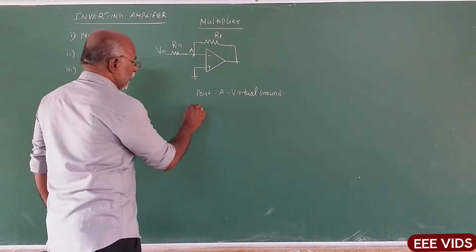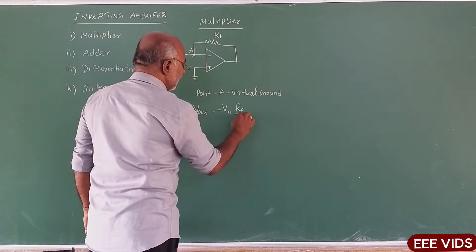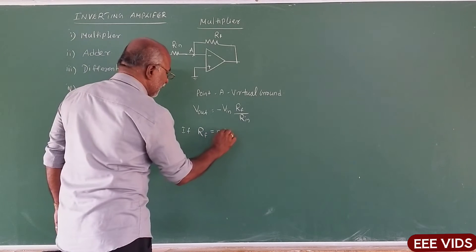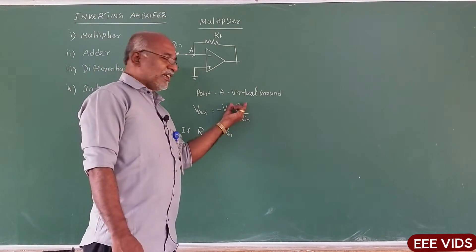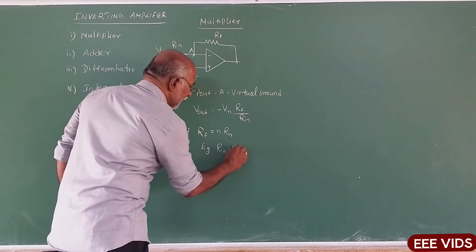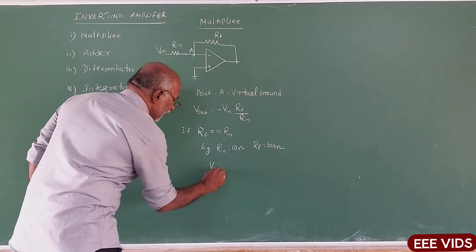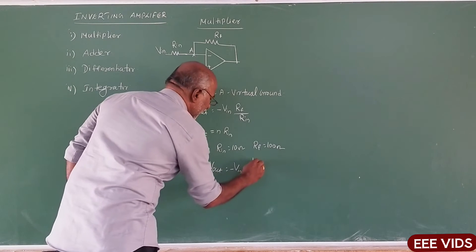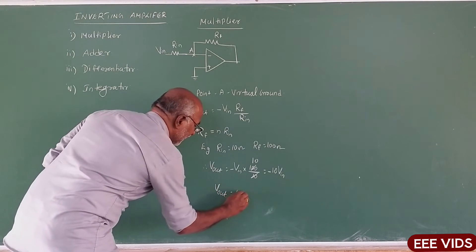Here, we know the formula theory. The output of the formula: VOUT is equal to minus VIN into RF by RIN. From the formula, if RF is equal to N times RIN — for example, we use 10 Ohm for RIN and 100 Ohm for RF, so RF is 10 times RIN. Therefore, VOUT is equal to minus VIN into RF divided by RIN, which gives minus 10 into VIN. So, VOUT is equal to minus 10 times VIN.